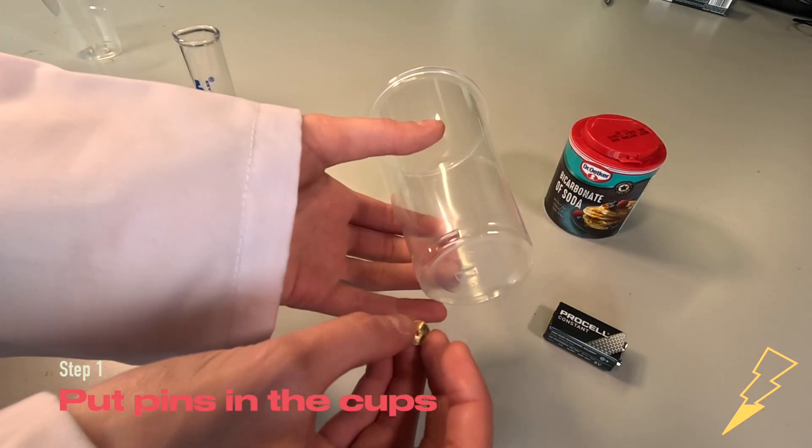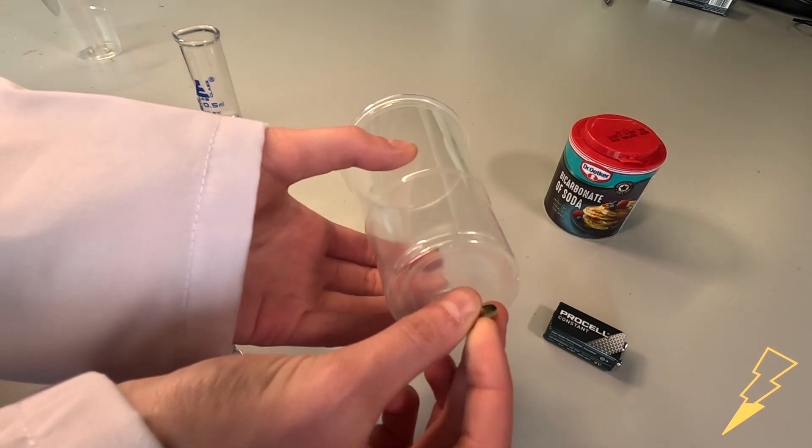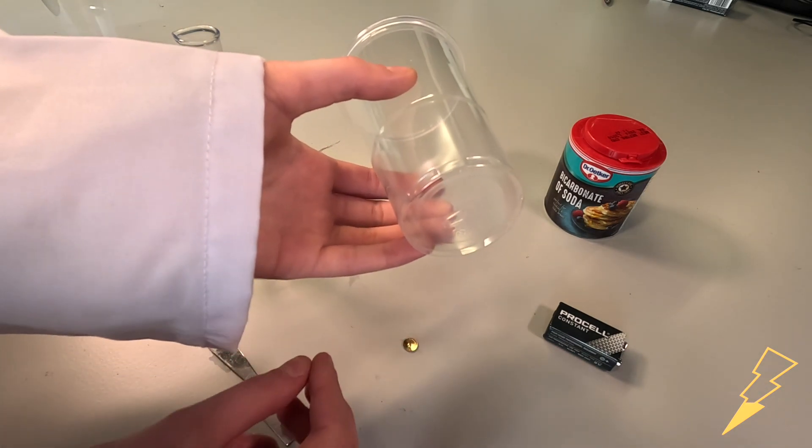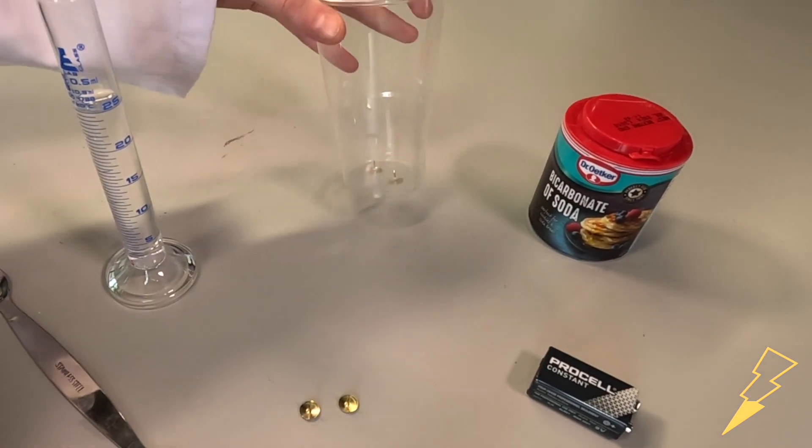First we are going to take one of our plastic cups and insert two drawing pins into the bottom. This can be quite fiddly so you need to be careful not to stab yourself while doing this.